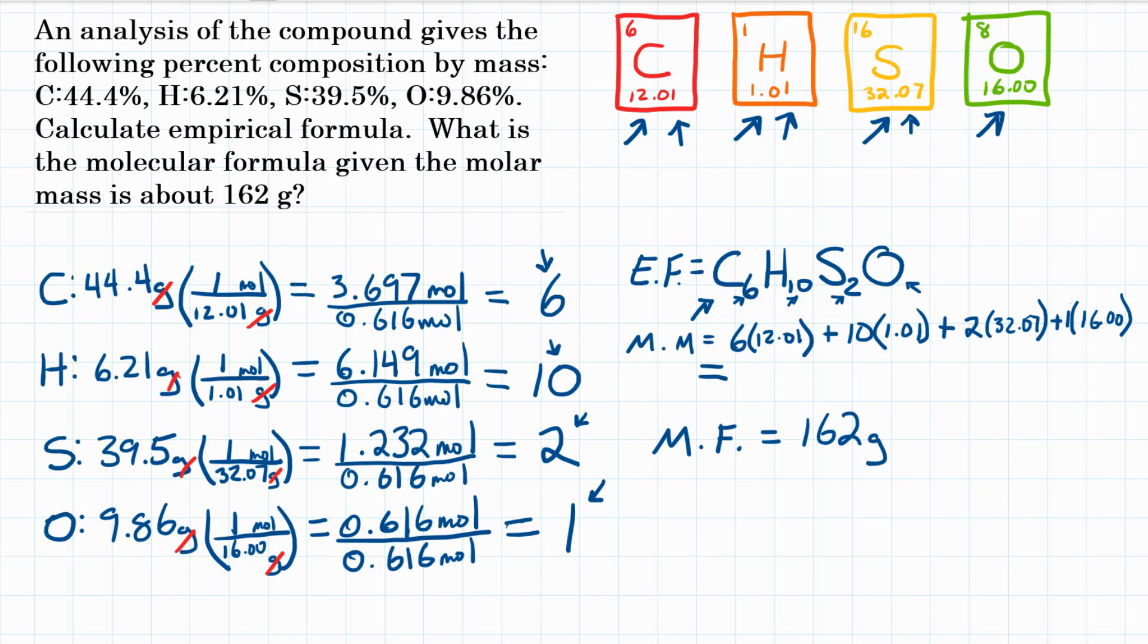That gives us a molar mass of 162.3 grams. So, we calculated the molar mass here is 162.3 grams. That is pretty much almost what they said is 162 grams. So that means that the molecular formula is the empirical formula. Okay, they are the same. So final answer, what is the molecular formula for this compound? It is C6H10S2O.